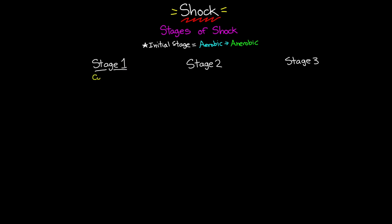When we look at the first stage of shock, this is often called the compensated stage, or sometimes referred to as the non-progressive stage of shock. What's important to know in this first stage is that there is no drop in blood pressure yet. This tells us that the body's compensation mechanisms have kicked in — that's where we get the name compensated or non-progressive, because the blood pressure is not progressing.